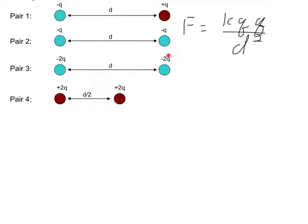Pair 3 has the same separation as the first two, so the denominator would remain the same, but both of the charges in the pair have a larger number of Coulombs, so you would have a 2 and a 2 in the equation, hence making the force four times bigger, which means that pair 3 would be larger than pair 1 and pair 2.